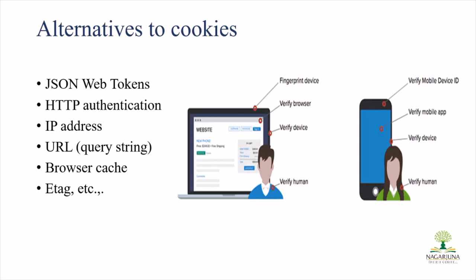Cookies are not the only way to track or save files, personal data, passwords, or any data. We have alternatives. These include JavaScript tokens, HTTP authentication, IP address, URL, browser cache, and ETags. These points can also save all your data from what you're doing in web browsers on the internet. The system can also verify human presence, verify device, verify browser fingerprint, and device - all of this is done automatically when personal data is saved.